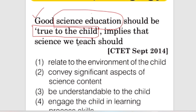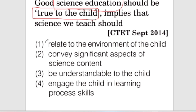It is important to learn about the environment of the child and the student. It is important to convey significant access to science content. It is important to understand the environment of the child. The fourth option is to engage the child in the learning process — to engage the child in learning process skills.